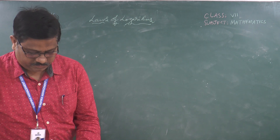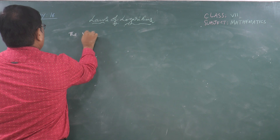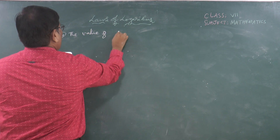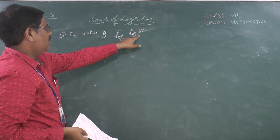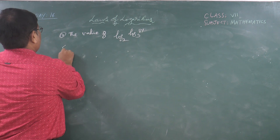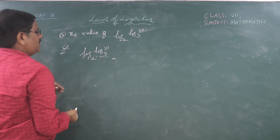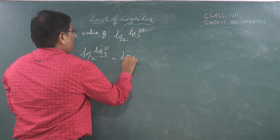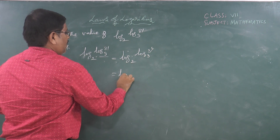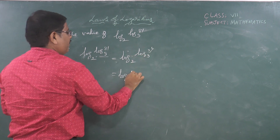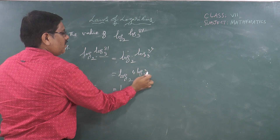The next question is: find the value of log [log 81 to the base 3] to the base 2. First, simplify the inner logarithm. We can write 81 as 3⁴, so log 3⁴ to the base 3, applying the power rule, gives 4 times log 3 to the base 3, which equals 4 times 1, so the inner part equals 4.